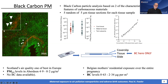Scotland's air quality is really good in European terms. We know what the PM 2.5 levels are for Aberdeen as a whole, but unfortunately we do not have black carbon data for Aberdeen. In Belgium, on the other hand, the residential exposure data covered entire pregnancies, with black carbon levels up to 2.34 micrograms per cubic meter of air.